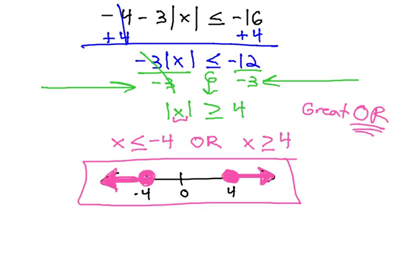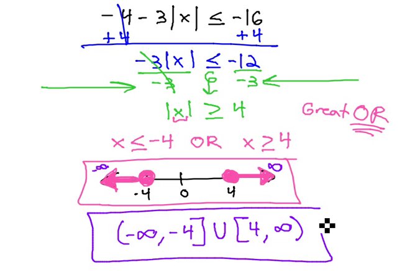We can represent this picture in interval notation as well. Going left to right, we're down to negative infinity, which always has a curved bracket, comma, negative 4, which gets a square bracket because it's or equal to, union to show there's a second part, square bracket at 4, and this time we go off to infinity, which always gets a curved bracket. We now have interval notation for this absolute value inequality.